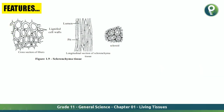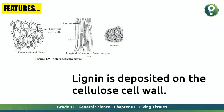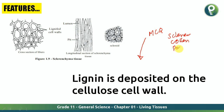An important feature of Sclerenchyma tissue: lignin is deposited on the cellulose cell wall. This is likely to appear as an MCQ question — they may ask which tissue has lignin deposited on the cellulose cell wall, with options including Sclerenchyma, Collenchyma, Parenchyma, or none of the above. They may also ask where lignin is deposited in Sclerenchyma, and the answer is on the cellulose cell wall.